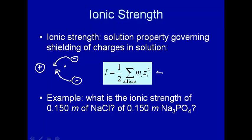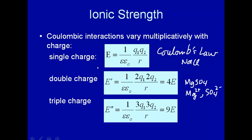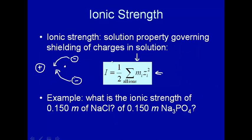This is how we define ionic strength: concentration times charge squared. We're putting charge squared in there because the energy of interactions vary as the square of the charge. So for each ion in solution, you take its concentration and multiply by its charge squared and add them all up and divide by one-half.